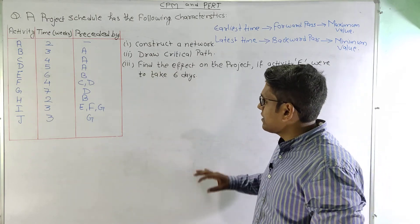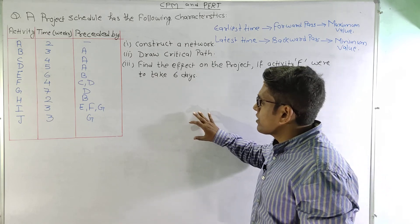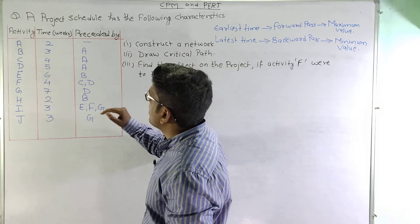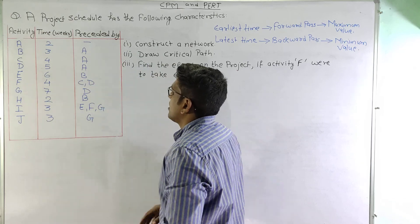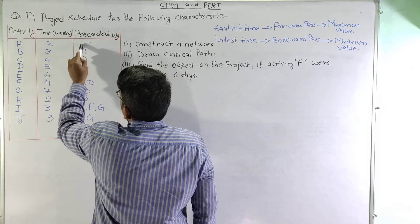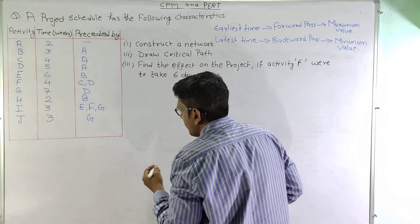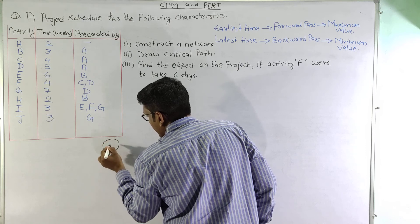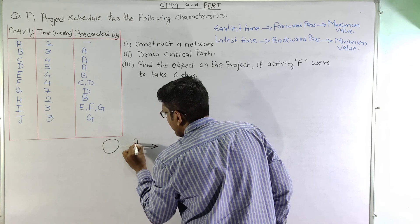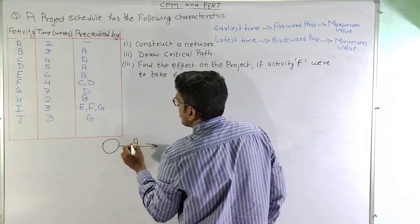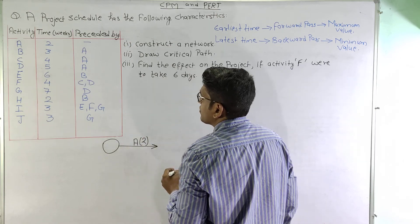Let us start by constructing the network. First, we will see which is the unprecedented activity in this problem. As we can see, the only activity with no predecessor is activity A. So we can start activity A from the starting node. Activity A has a time of 2 weeks.